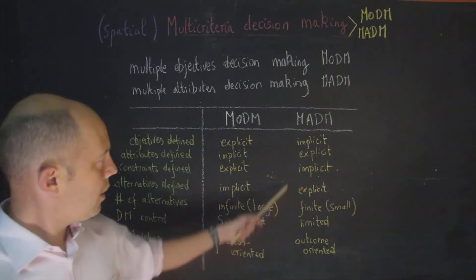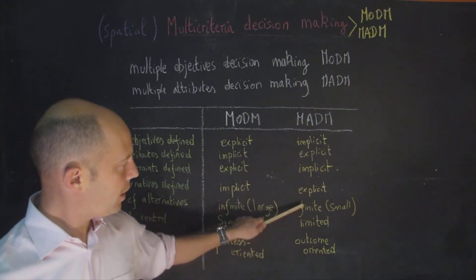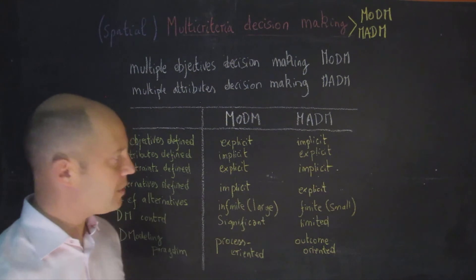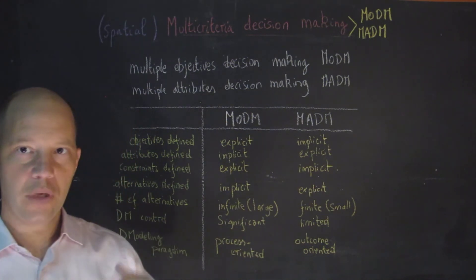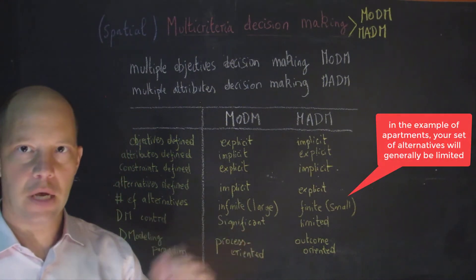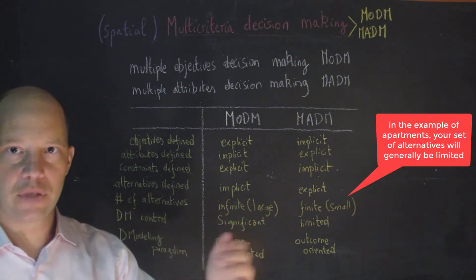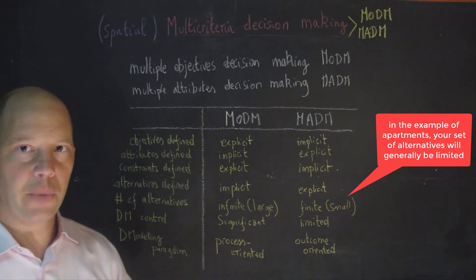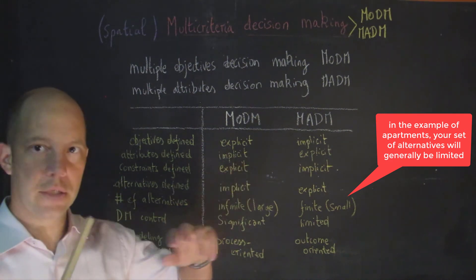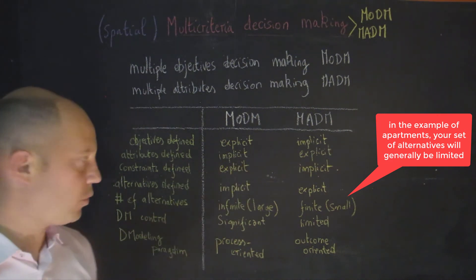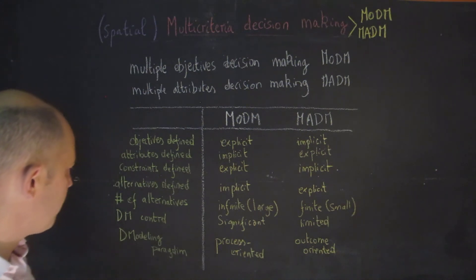For multiple attribute decision-making, the number of alternatives is relatively small — it's finite. When looking at, for instance, a car, an apartment, or a house, we're usually not taking into account millions of different solutions, unlike for multiple objective problems.